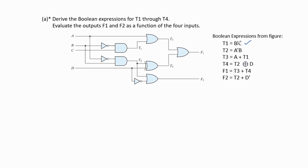t1 equals b' c because t1 is the AND gate output. The inputs are b and c. b is passing through a NOT gate, therefore it becomes b'. So b' AND c is the AND operation, giving t1 = b'c. Similarly, t2 equals a'b, which is another AND gate for inputs a' and b.